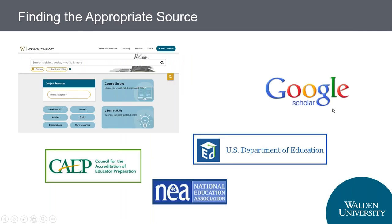Some of the information on the open web is useful — there's good information through professional organizations and government websites, and Google Scholar is a great tool. But your main source for coursework is going to be current journal articles. Books take a long time to publish and are mostly used for background information. The main focus tonight is on how to find journal articles to use for your assignments and to back up your discussion posts.